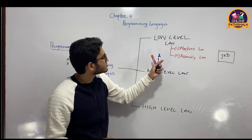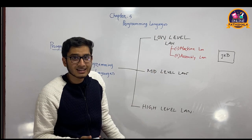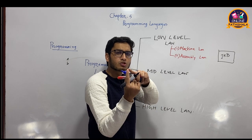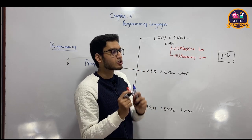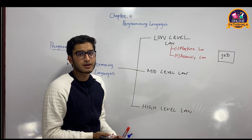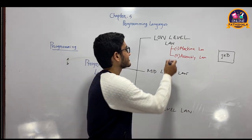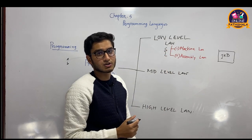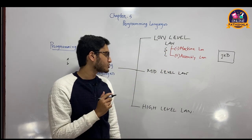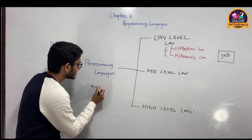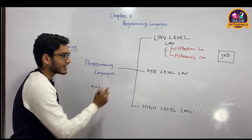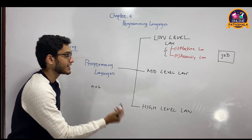Every language has a level, and it has its own processing demand. We can use a CPU or a computer accordingly. So we can use memory and processing power. Low level language requires less memory, mid level language requires moderate memory, and high level language requires more memory.